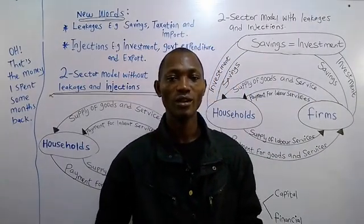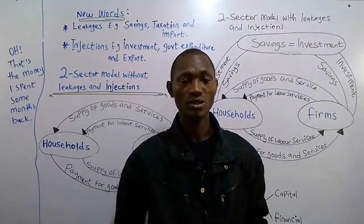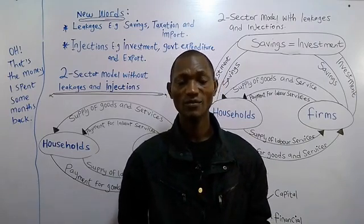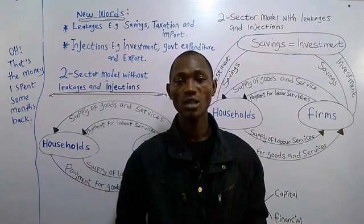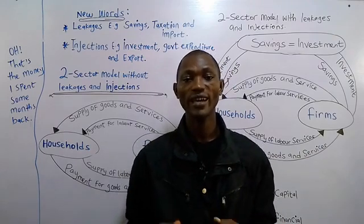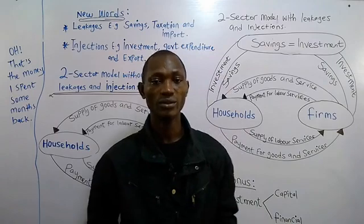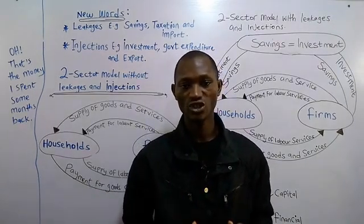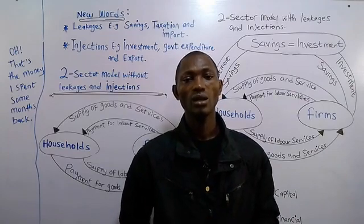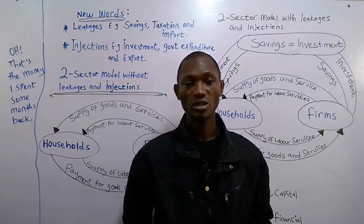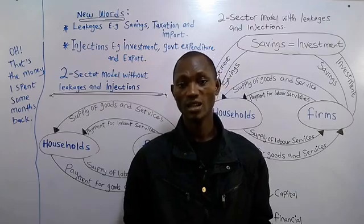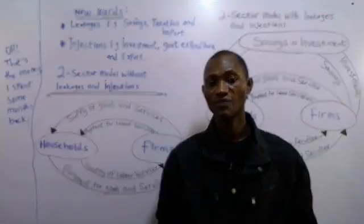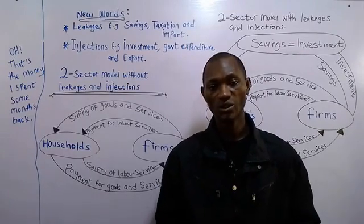Hi, I'm Ambolore. Today's episode is on circular flow of income. The concept of circular flow of income explains how money moves from one economic entity to another. When we talk of economic entities, they are also called decision-making agents, such as individuals, business firms, and governments. So how does money move from these various economic entities within an economy?